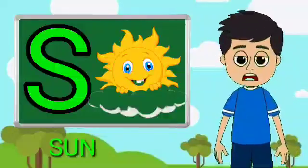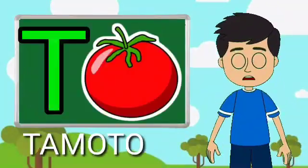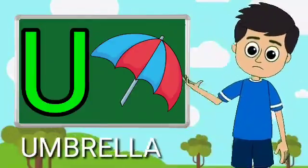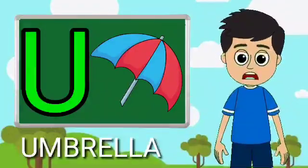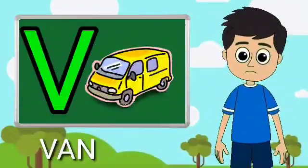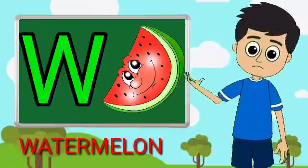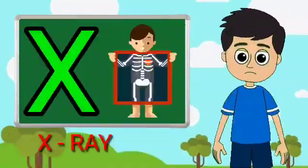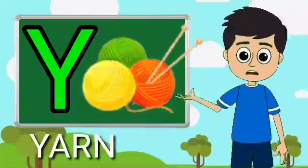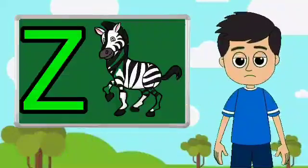S for sun, E for tomato, U for umbrella, E for band, W for watermelon, X for extra, Y for yarn, J for jayvra.